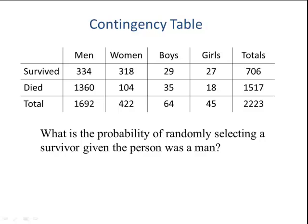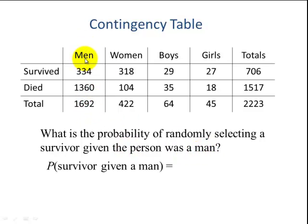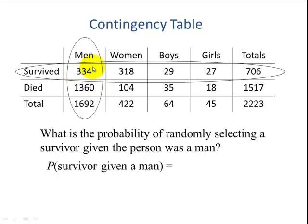Here's another conditional probability problem. What is the probability of randomly selecting a survivor given that the person was a man? Now we're only looking at the men, which totaled 1,692. How many of those survived? 334. So this probability is much lower: 334 divided by 1,692 is about 20%.